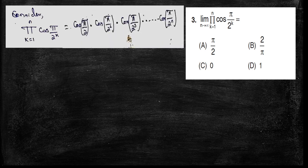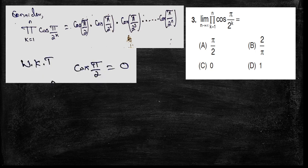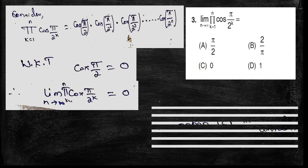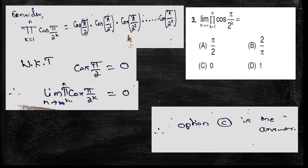So the product expands as cos(π/2) times cos(π/2²) times cos(π/2³) and so on, with nth term cos(π/2^n). We know that cos(π/2) equals cos 90 degrees equals 0. So the first term equals 0, and the product of 0 with anything is always 0. Therefore, the limit equals 0, and option C is the correct answer for question 3.